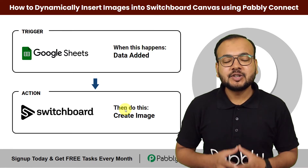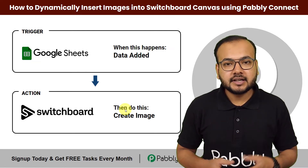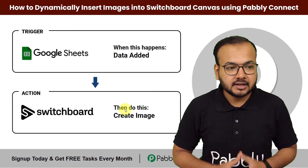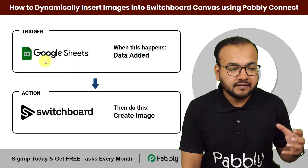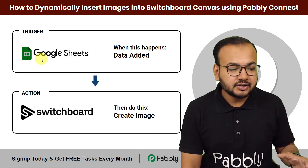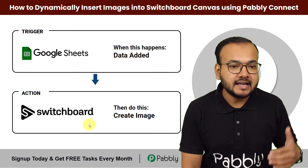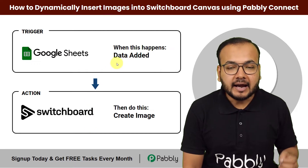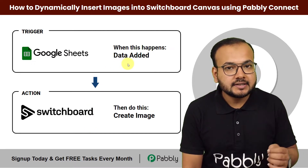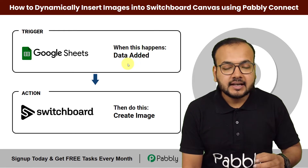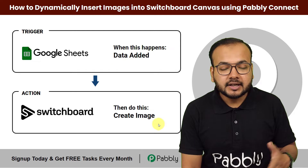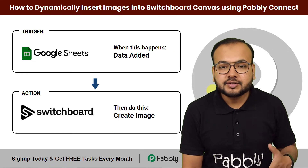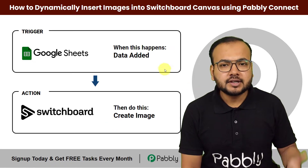Hey everyone. In this video you will learn how you can dynamically insert images inside a template in Switchboard Canvas application using Pably Connect. Here you can see we have connected Google Sheets as the trigger application and Switchboard Canvas as the action application inside the workflow. You just have to add the data that you want to insert inside an image in Switchboard Canvas, and once you enter the data, an image will be created out of a template automatically.